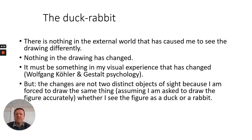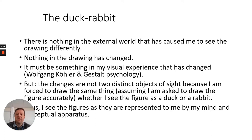The object itself does not change. If I drew the duck-rabbit when I could only see it as a duck, as accurately as I could, when I then come to see it as a rabbit I'm still forced to draw the same thing, because the object has not changed. The conclusion is that I see these figures as they are represented to me by my mind.